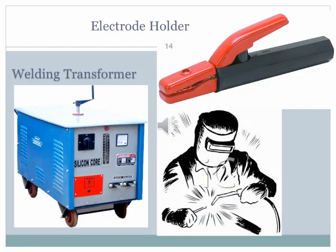The welding transformer or power source absorbs and conducts electricity through the circuit, enhances electric power, and delivers the required voltage for welding. The electrode holder, into which the welding electrode is inserted, is shown on the top. A typical welding setup with safety harnesses and safety glass is also visible. This basic welding process is commonly seen in workshops and fabrication shops.